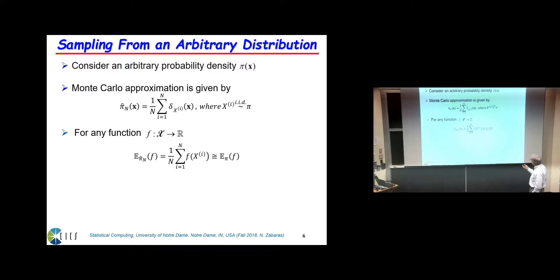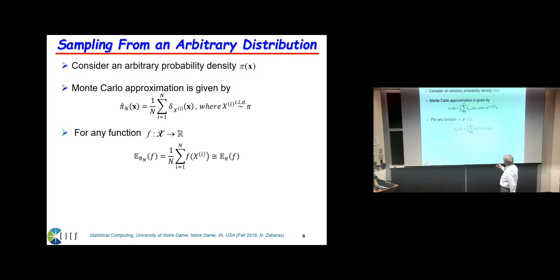The estimator is unbiased — the expectation of this estimator is actually the true expectation of f(x), and the variance is the variance of f(x) divided by N. What we need to discuss today is the first step: how to sample from pi(x). This is the Monte Carlo approximation or empirical measure of the distribution. If you take N samples you can approximate this non-parametric distribution. The Monte Carlo estimates are expectations of f(x) computed with this empirical approximation.